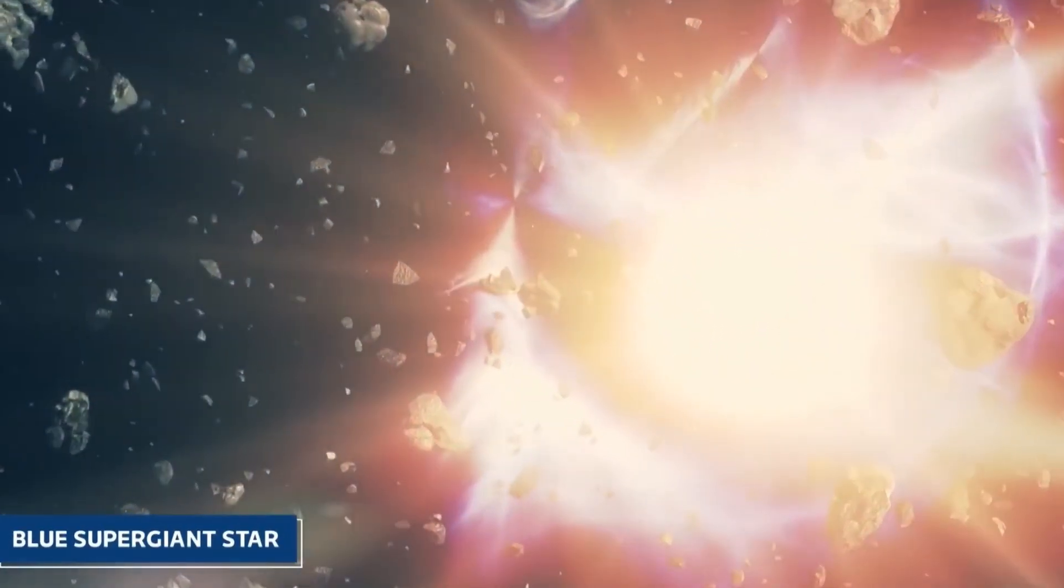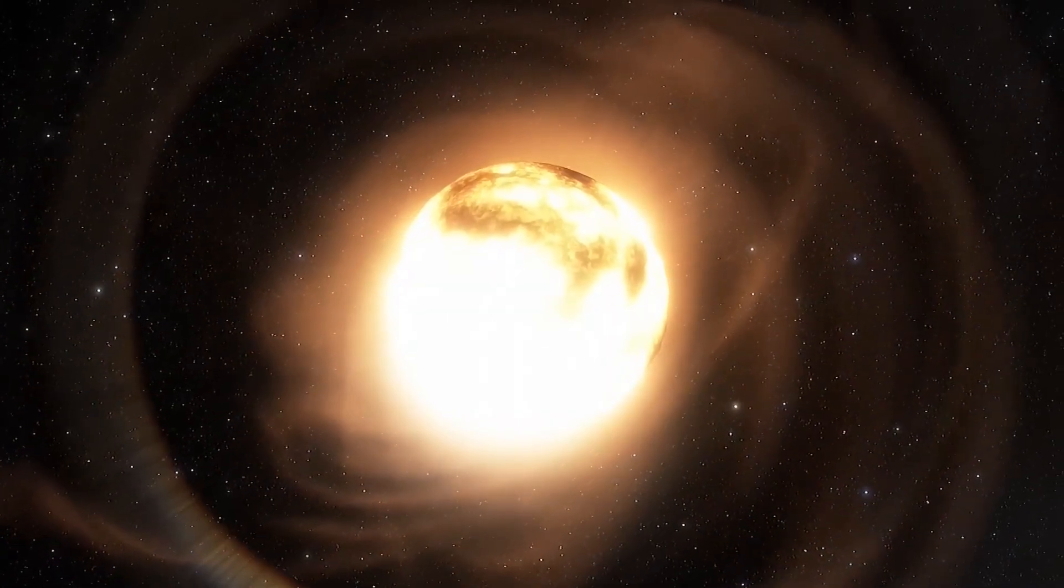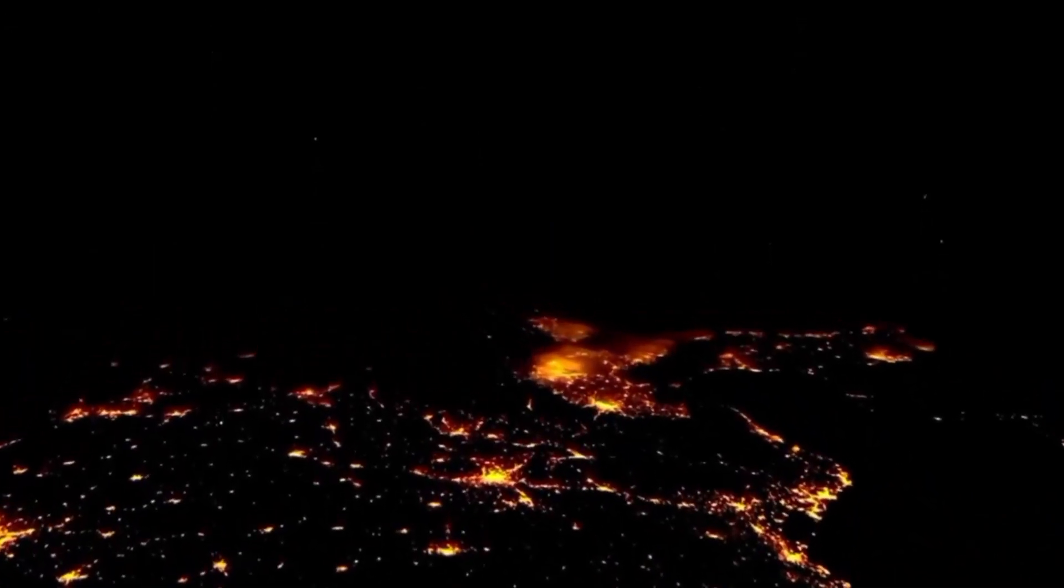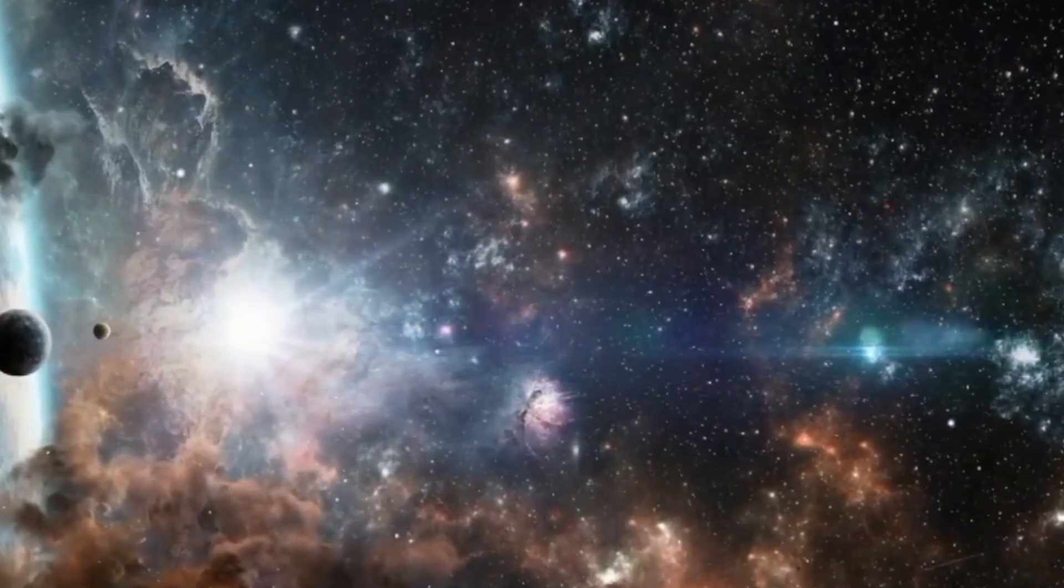The life cycle of a star is determined by its mass, and Betelgeuse, being 20 times the mass of our sun, has always been destined to end its life in a supernova explosion. The sudden dimming could be an indication that the star is running out of fuel and is about to collapse under its own gravity.